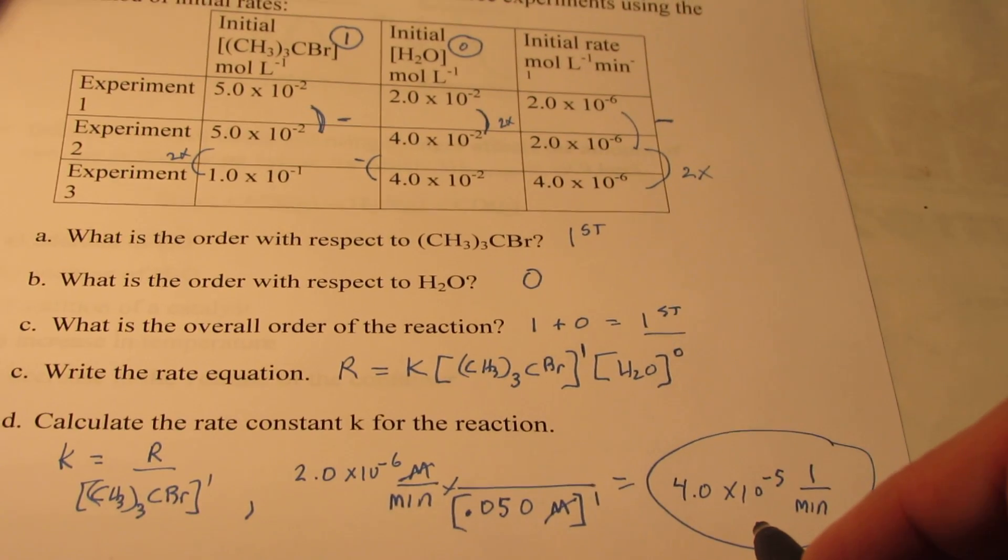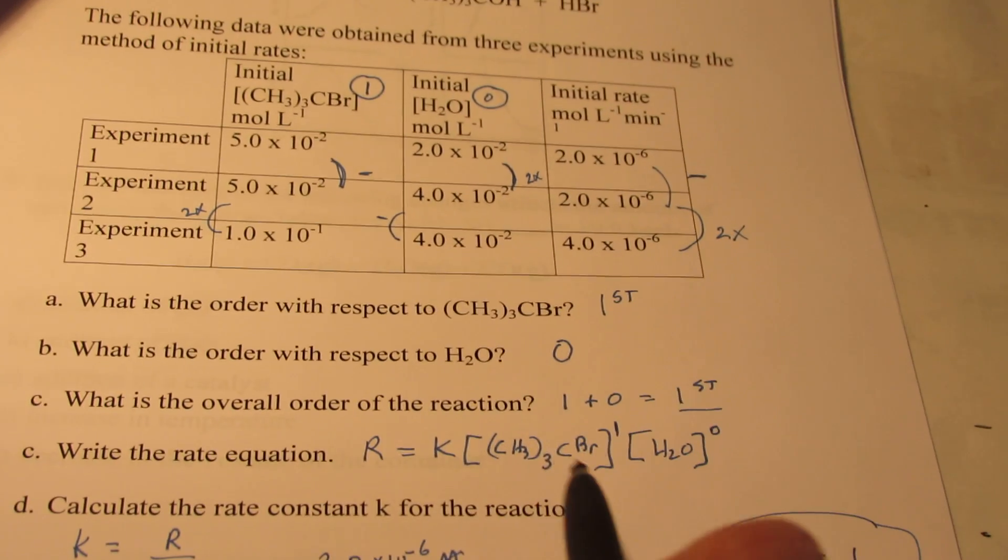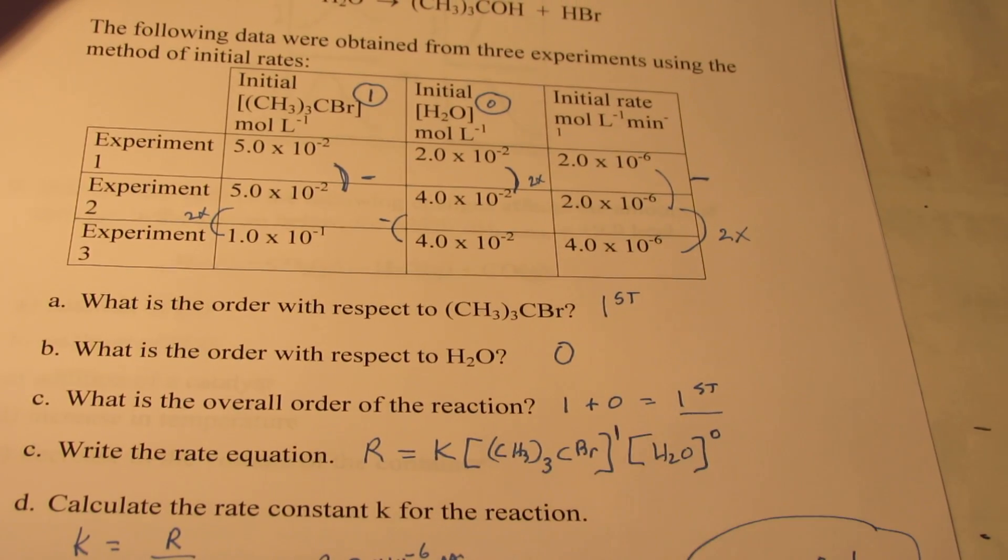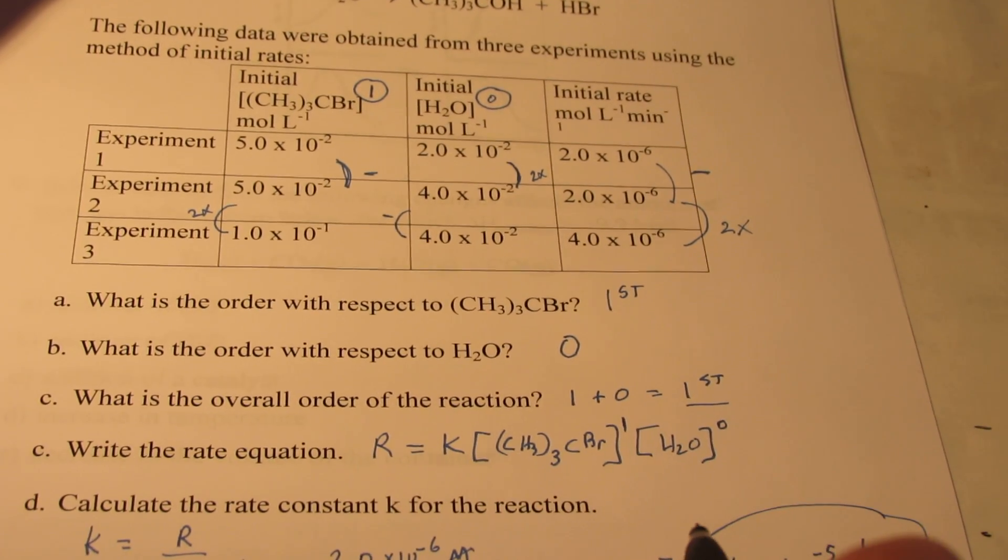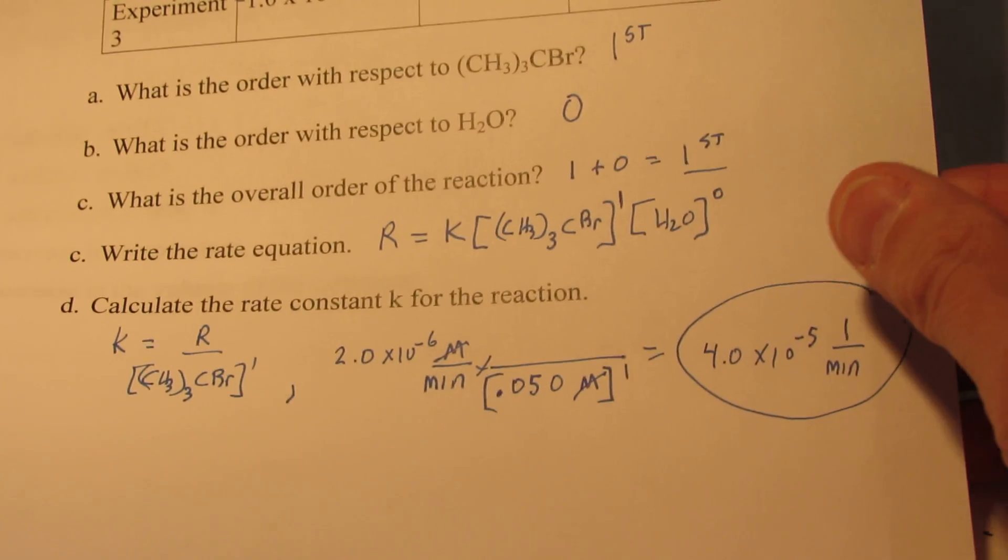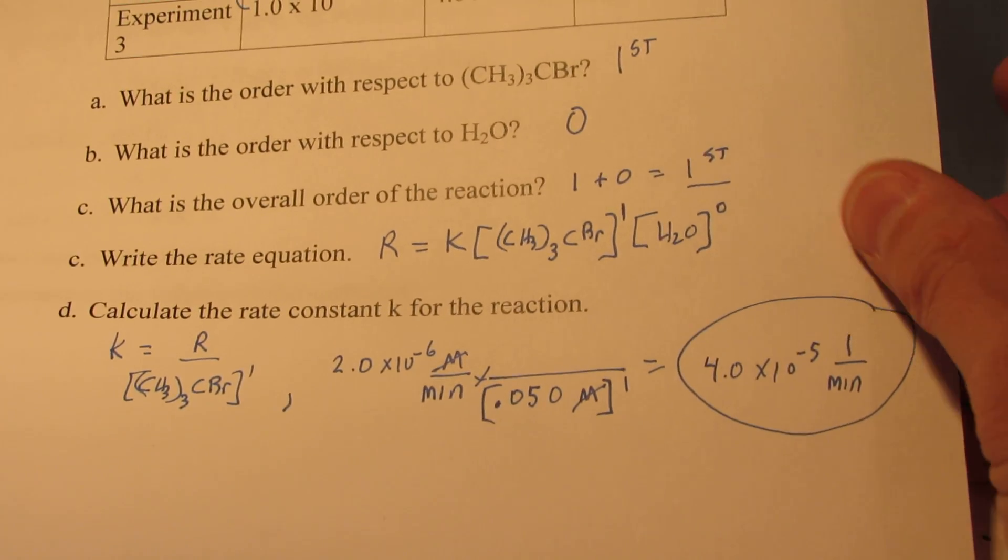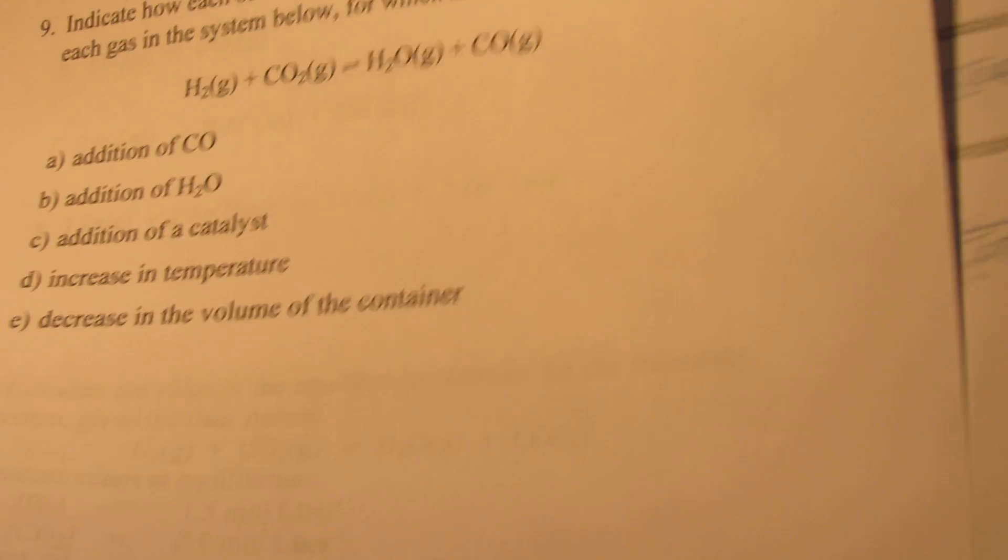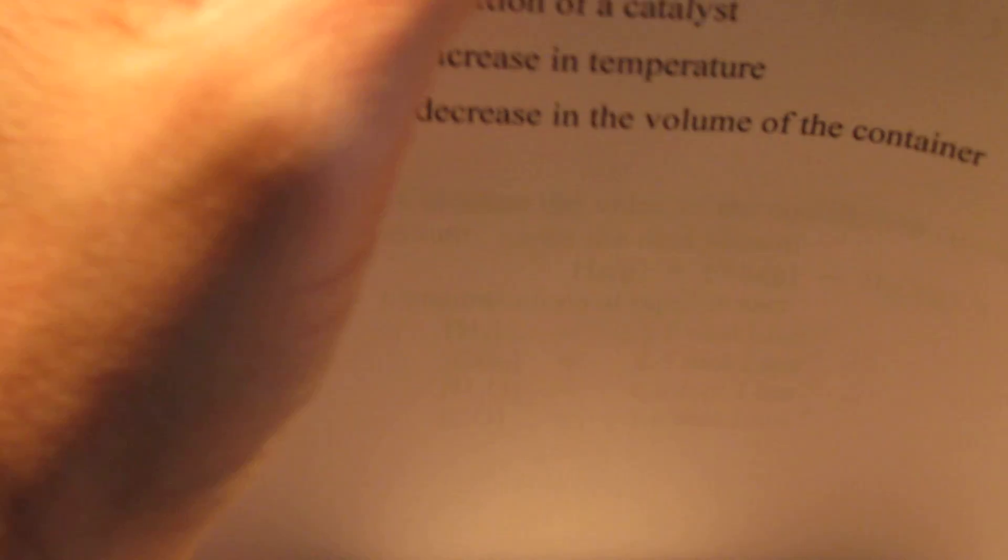Now, once you know the rate constant, you can find the rate of the reaction by using your rate law, at any concentration of your reactants. If I were you, I would do the two or three examples we did in our notes before the test, to make sure you're ready.